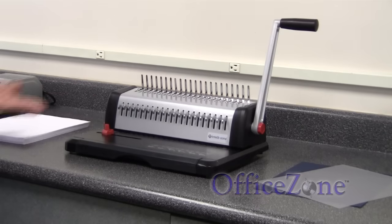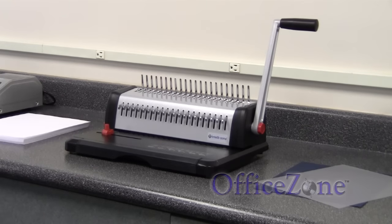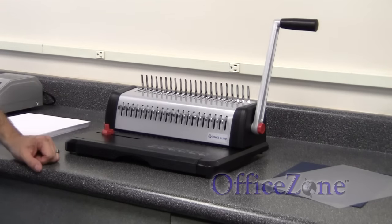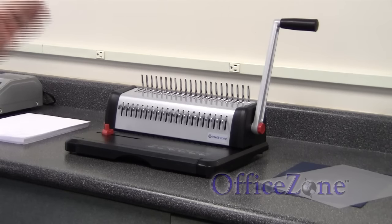What you're looking at here is the IntelliBind IB400 Combining Machine from OfficeZone. And a question that we get asked a lot here is, how do you use a comb binding machine?